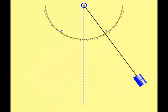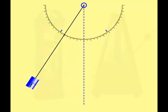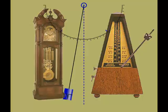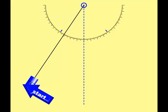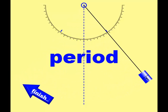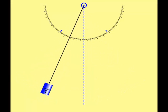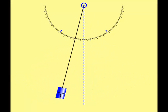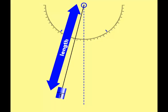Pendulums swing back and forth regularly, so regularly they can be used as a clock or a musical metronome. The time it takes a pendulum to swing from one side to the other and back is called its period. Galileo discovered that the period of a pendulum only depends on its length. Mass has no effect.